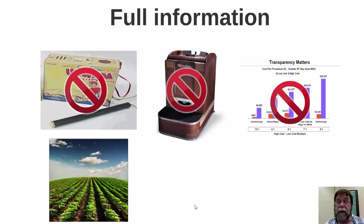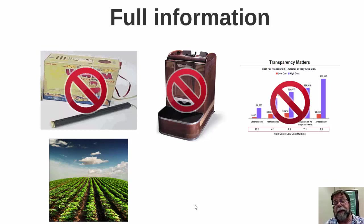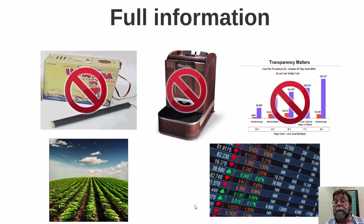There are some markets that come close to having perfect information. Agricultural markets are probably one of the better examples, where buyers and sellers know what the current price is. Similarly, in stock markets, price information is transmitted almost immediately to anyone participating in the market.